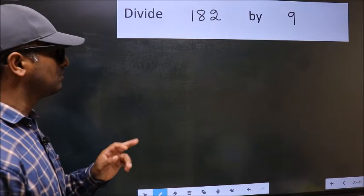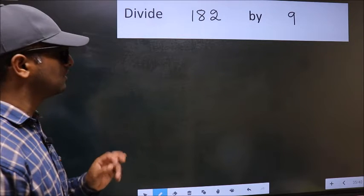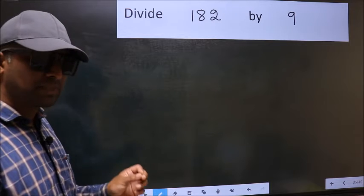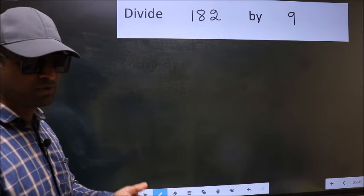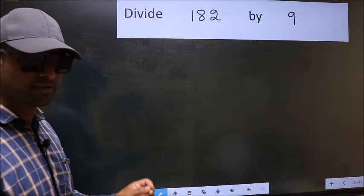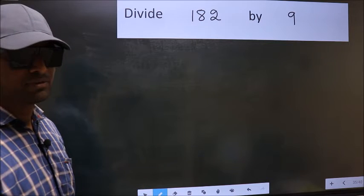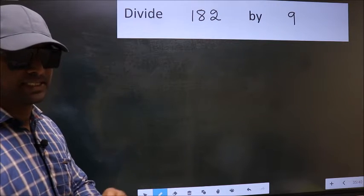Divide 182 by 9. While doing this division, many do this mistake. What is the mistake that they do? I will let you know. But before that, we should frame it in this way.